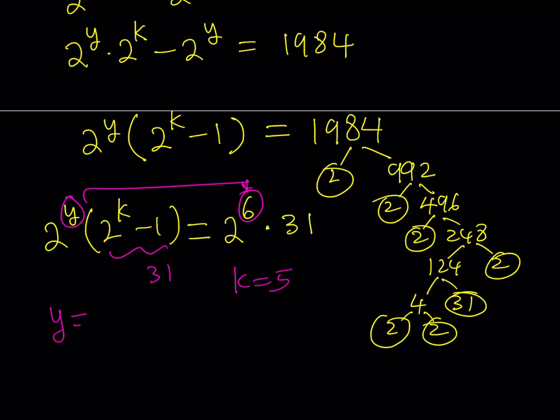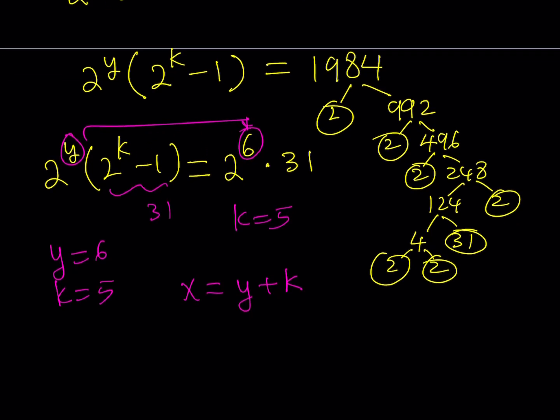So, I now know that y is equal to 6 and k is equal to 5. So what? I haven't found x yet, right? But remember, our assumption was that x is equal to y plus k because x is greater than y, so their difference is positive, so on and so forth. Well, if I know k and y, I can find x. So from here, we get x is equal to 6 plus 5, which is 11.